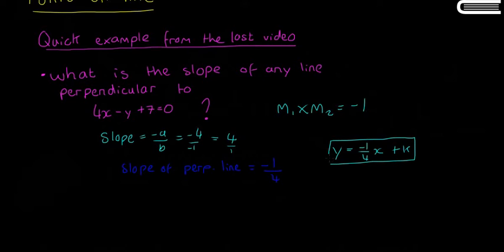Because k can be anything, this represents a family of perpendicular lines. If you draw this out, the original line would look like this, and the perpendicular lines can be any of these lines, as long as they're perpendicular.